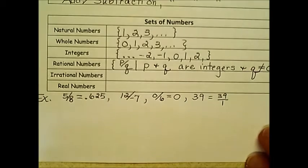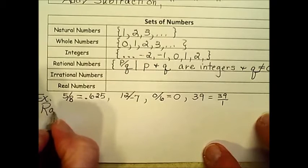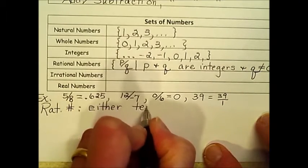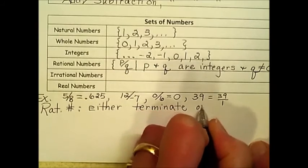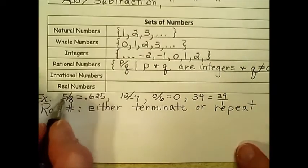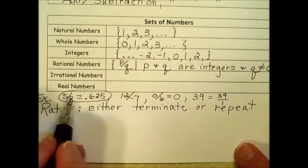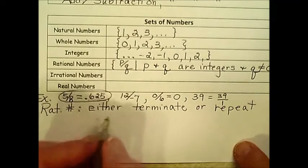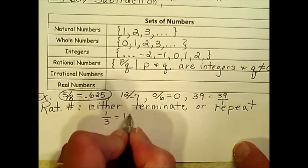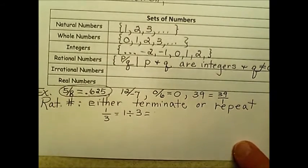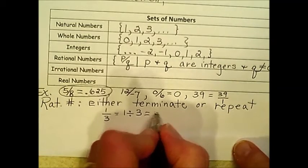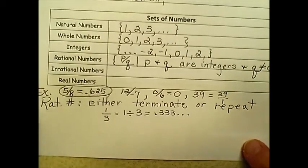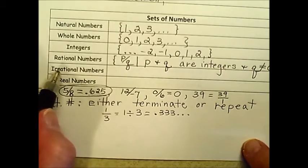One thing to note about rational numbers is that they either terminate or repeat. And what do I mean by that? I had the decimal equivalency here of 5 eighths the rational number. This decimal terminates. It stops. When you do the division, 5 divided by 8, it stops. If I have the rational number 1 third, and I look for the decimal equivalency, I'm going to take the numerator divided by the denominator. When you do the division, you end up with 0.33333, and it continues on repeating.